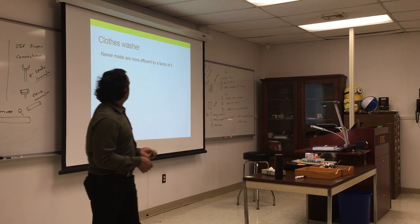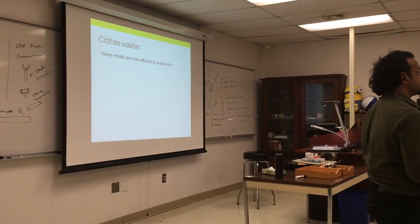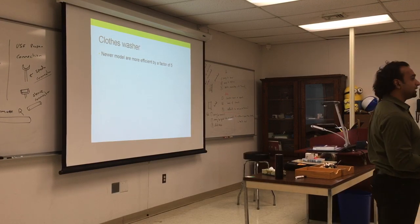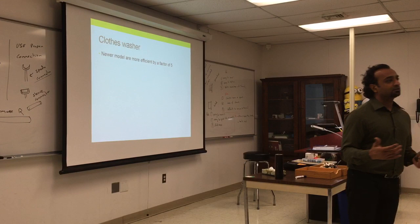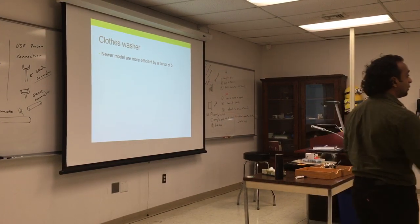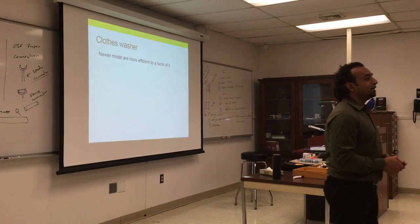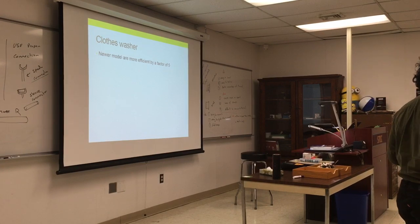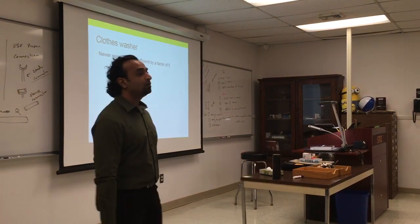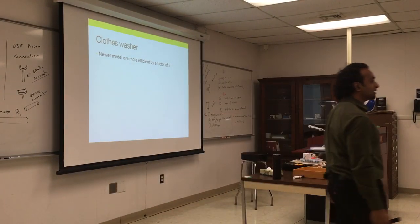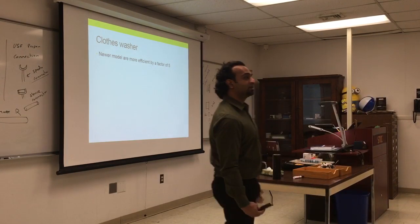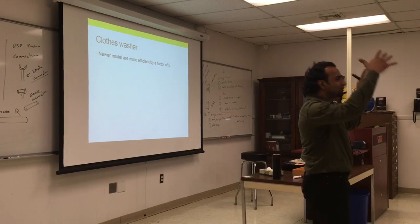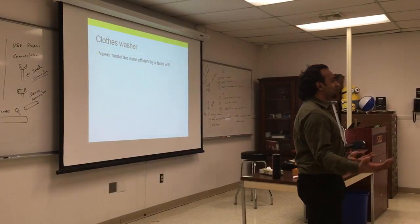Newer washer models are more efficient by a factor of five — that's huge. The old ones are very reliable but use a lot of energy, depending on the motor horsepower, drum size, and movement. Washing clothes is not about moving the clothes around vigorously — it's about how the water moves around the clothes. People are still working on newer models that clean more efficiently by moving water. Even though for a long time people didn't like the new ones, thinking they didn't clean as well, they do — just different methodology.